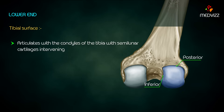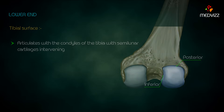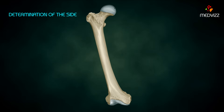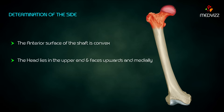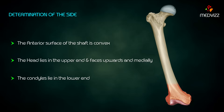The tibial surface forms the posterior and inferior parts of the articular surface and articulates with the condyles of the tibia with semilunar cartilages intervening. For determination of side: the anterior surface of the shaft is convex, the head lies in the upper end and faces upwards and medially, and the condyles lie in the lower end.